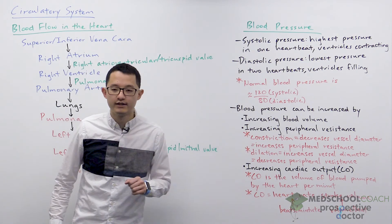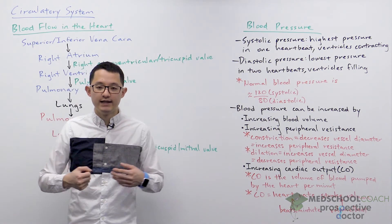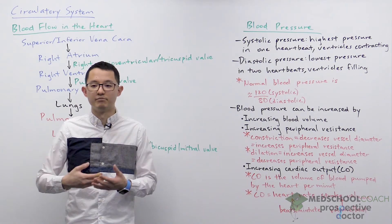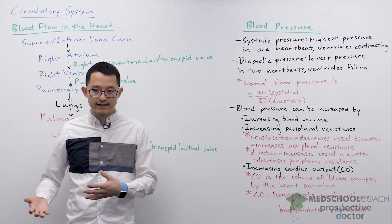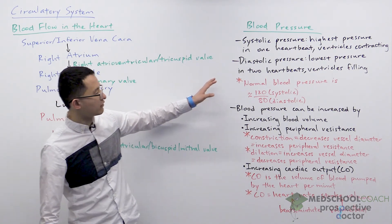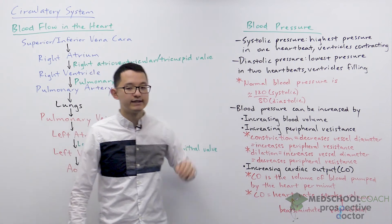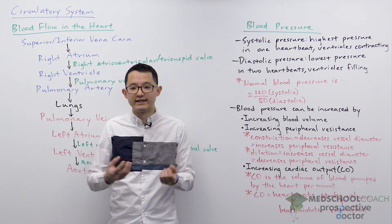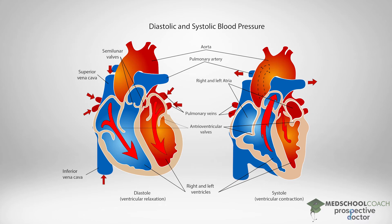Let's now discuss blood pressure. When the heart contracts it increases the pressure of blood in the blood vessels, but when it relaxes the blood pressure drops. These two pressures are called the systolic pressure and the diastolic pressure. The systolic pressure is the highest pressure in one heartbeat — essentially the highest pressure when the ventricles contract. The diastolic pressure is the lowest pressure in two heartbeats — essentially the pressure when the ventricles are relaxing and filling with blood.